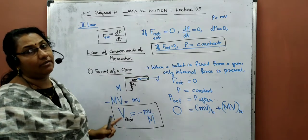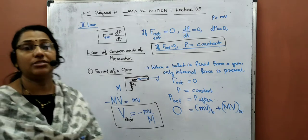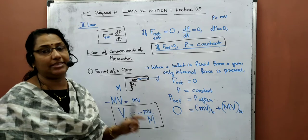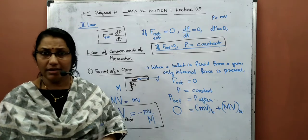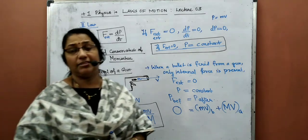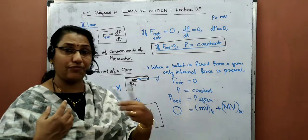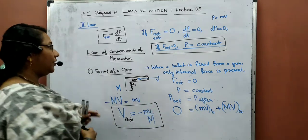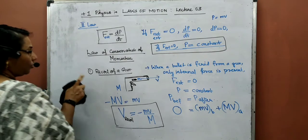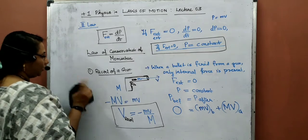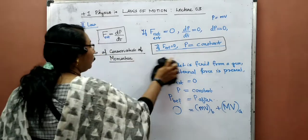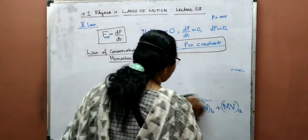The velocity with which the gun recoils back is called the recoil velocity, equal to minus (mv / MV) — small m, small v for bullet and capital M for the gun. This is why the gun recoils back when a bullet is fired, and the process is called the recoil of a gun — purely based on the law of conservation of momentum.